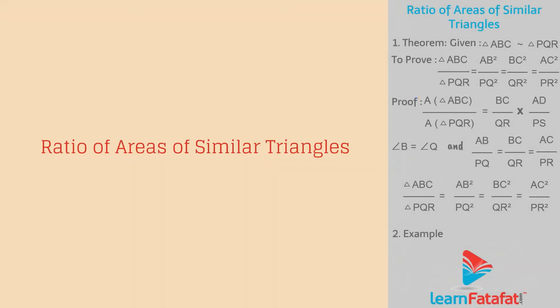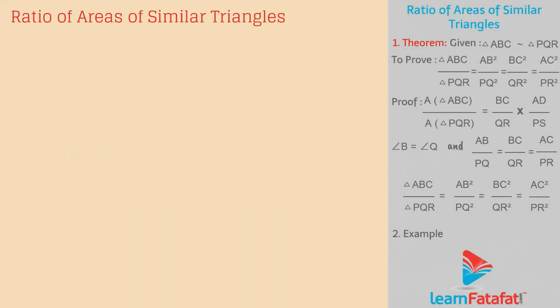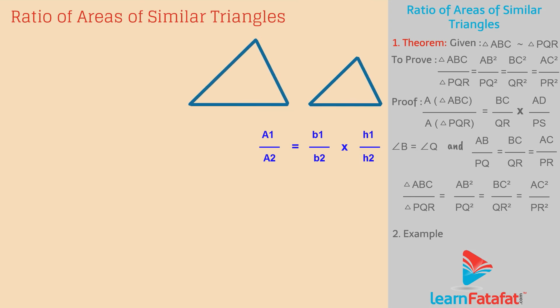Ratio of Areas of Similar Triangles. Dear students, we know that the ratio of areas of two triangles can be given as a1 by a2 is equal to b1 by b2 into h1 by h2. We will use this relation to find the ratio of areas of two similar triangles.